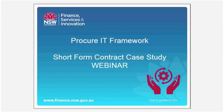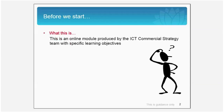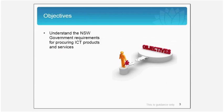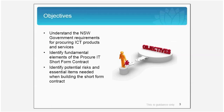Hello and welcome to the Short Form Contract webinar. This module will help you understand when to use the Short Form Contract with the aid of a case study. Before we start, a few things to take note of. This webinar is produced by the ICT Commercial Strategy Team with specific learning objectives. The content is not intended to be comprehensive nor does it constitute legal advice. The objectives are to understand NSW Government requirements for procuring ICT products and services, to identify fundamental elements of the Procure IT Short Form Contract, and to identify potential risks and essential items needed when building the Short Form Contract.